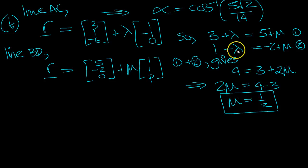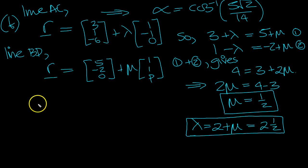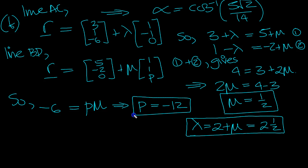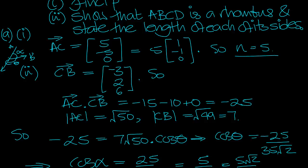So mu is a half. And in that case what does lambda equal? We can see it here. It will be 2 plus mu. Lambda, if I take the 3 to minus 3, 2 plus mu, mu is a half, so lambda is 2 and a half. So we know that minus 6 is equal to p times mu. Mu is a half. So p, move the half up, 2 up to be with a minus 6, p is minus 12. So there's our workings for p equals minus 12. So we find the value of p then in part 1.